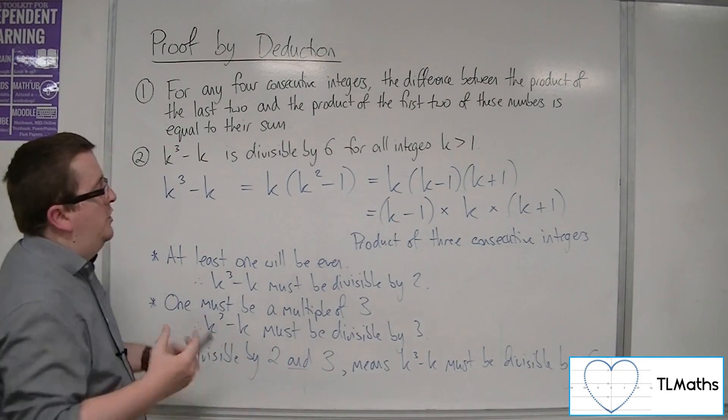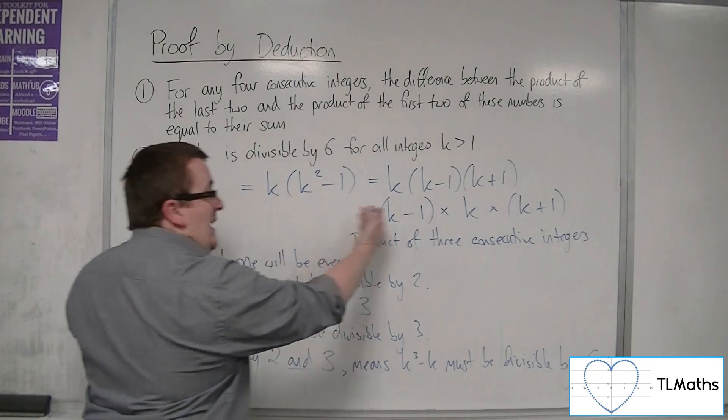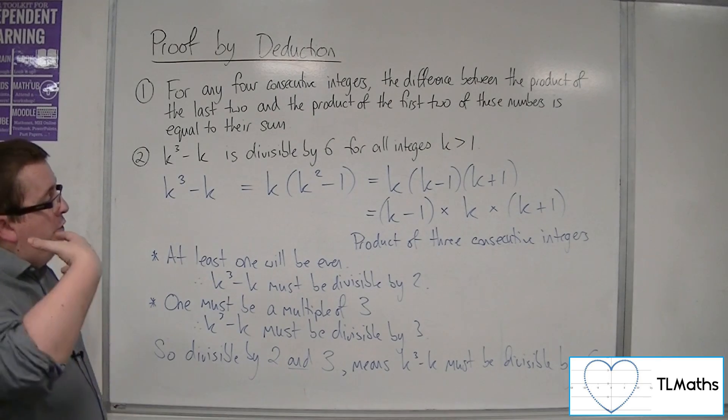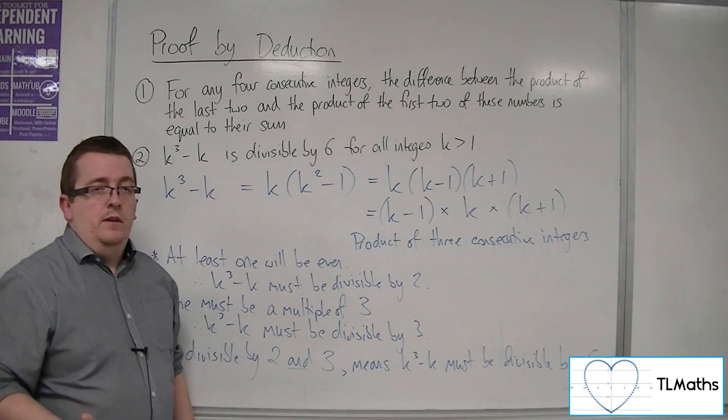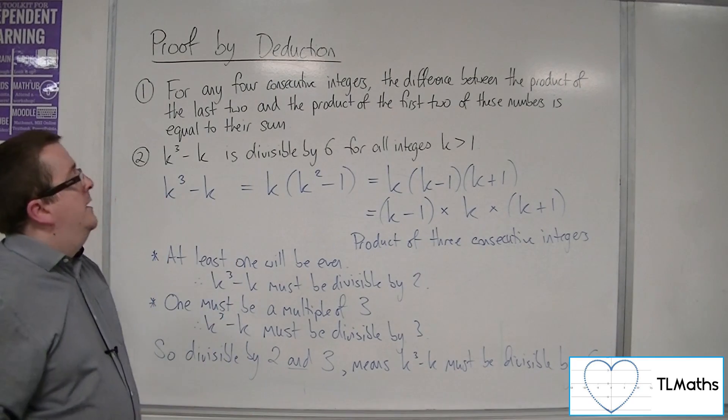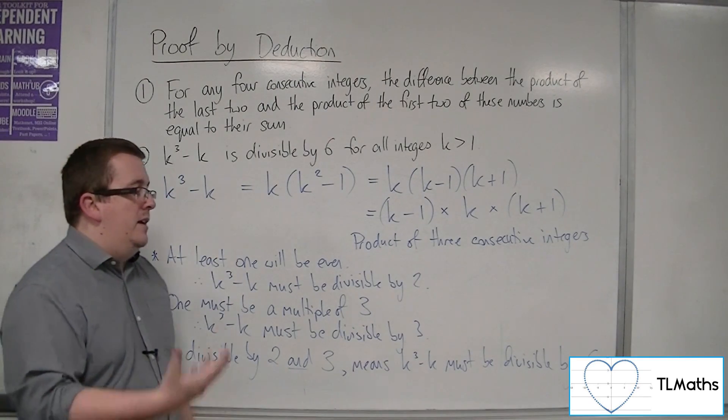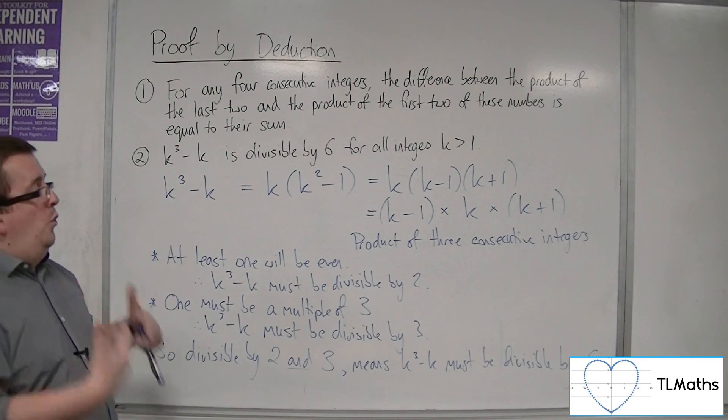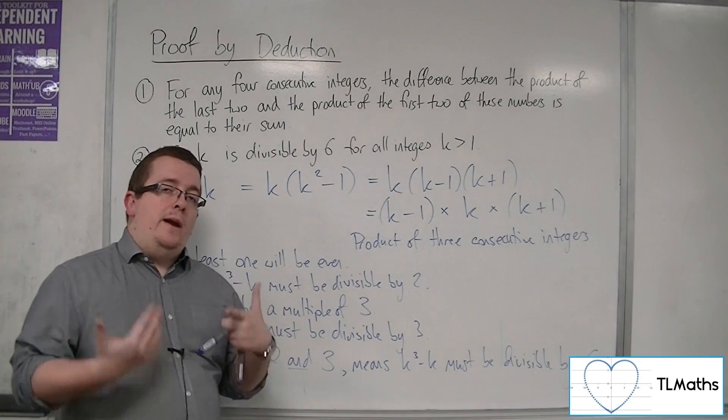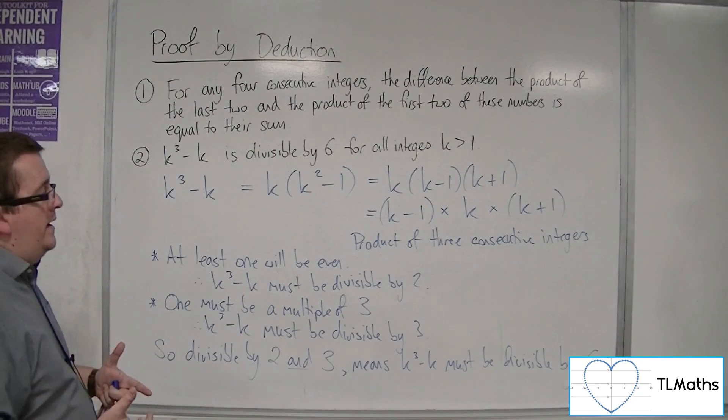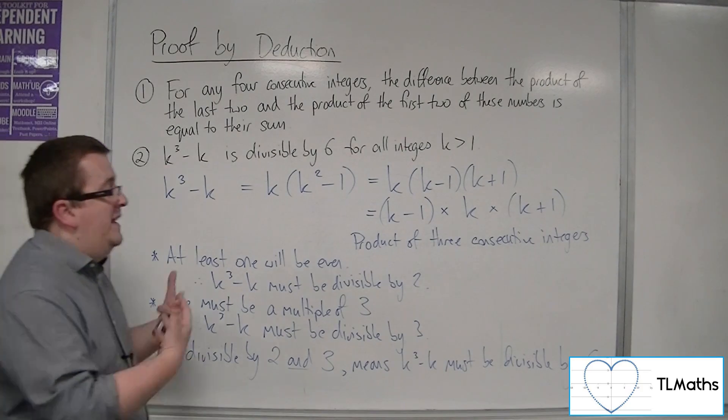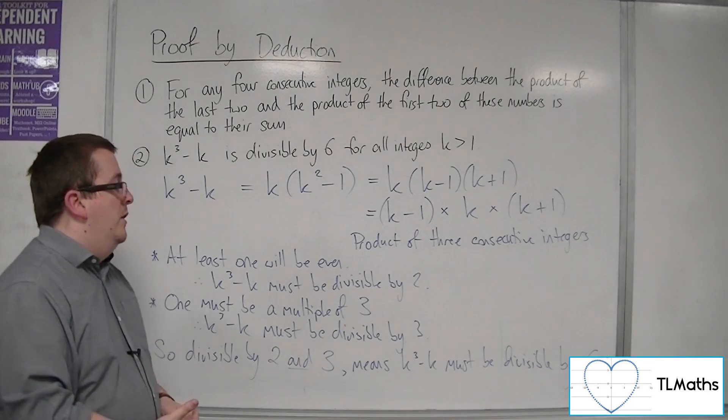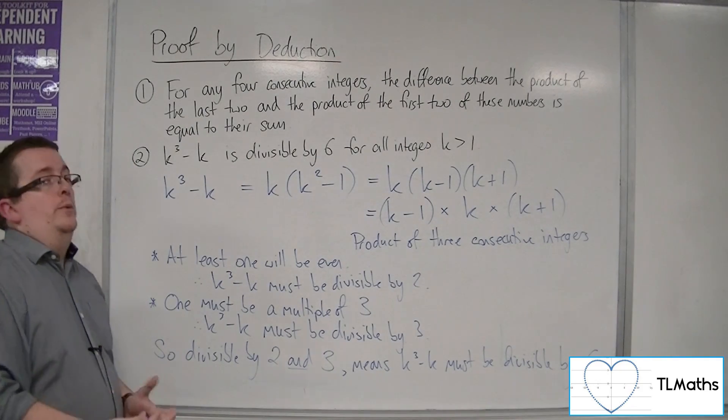And that, as you can see, went from an algebraic expression that we were considering, to a worded logical argument as to why k cubed minus k had to be divisible by 6. So, don't think that you automatically have to do everything that is proved by deduction algebraically. Some of them can just be explained by words. So, make sure that you're comfortable doing that.